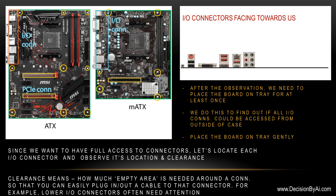Since we want to have full access to connectors, let's locate each IO connector and observe its location and clearance. Clearance means how much empty area is needed around a connector so that you can easily plug in or out a cable. For example, lower IO connectors often need special attention.